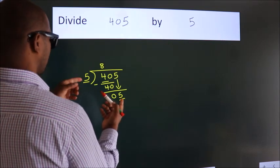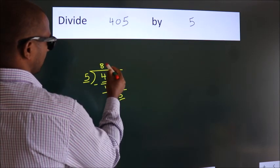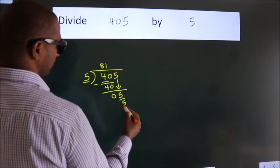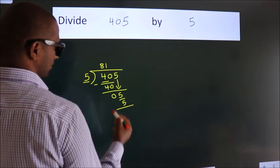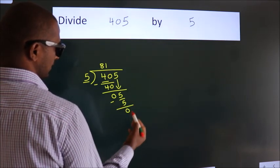When do we get 5 in the 5 table? 5 times 1 is 5. Now we subtract. We get 0.